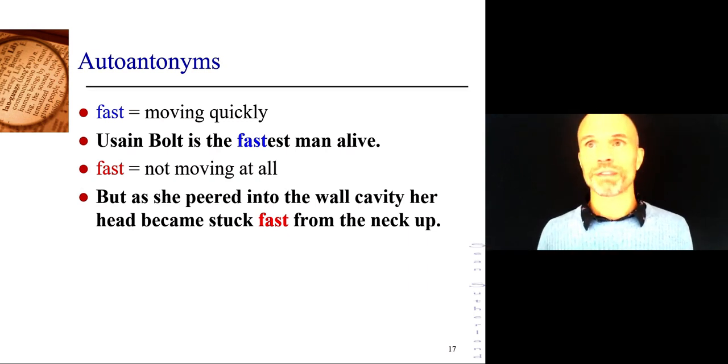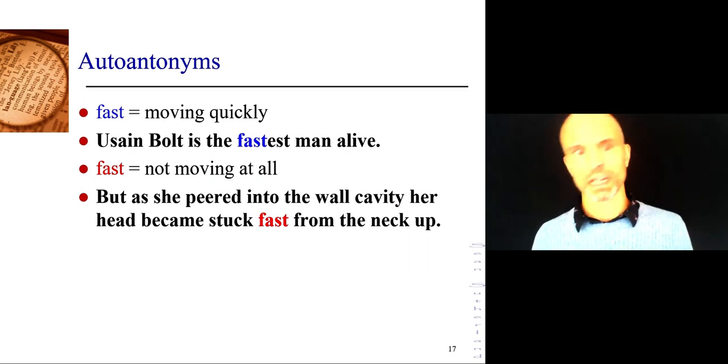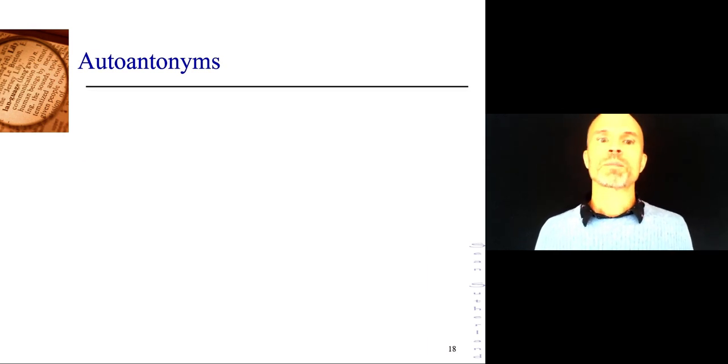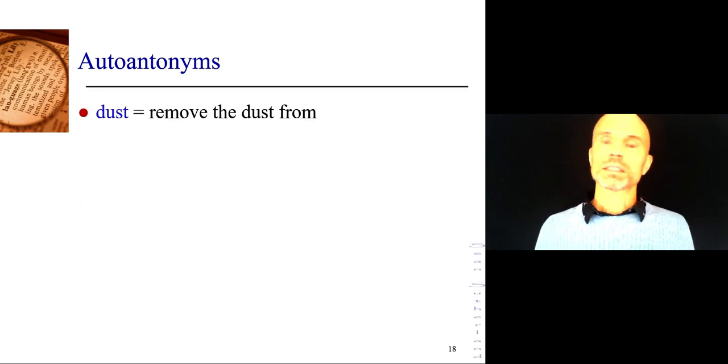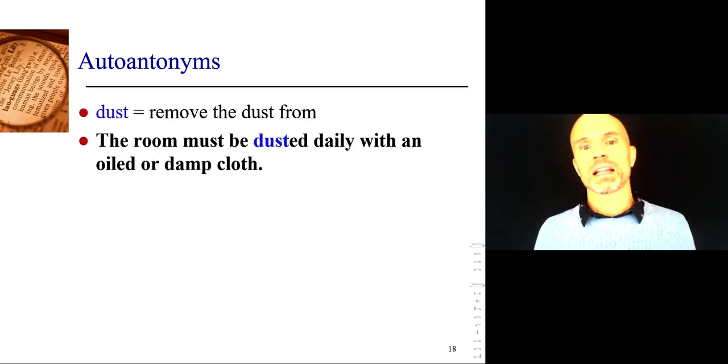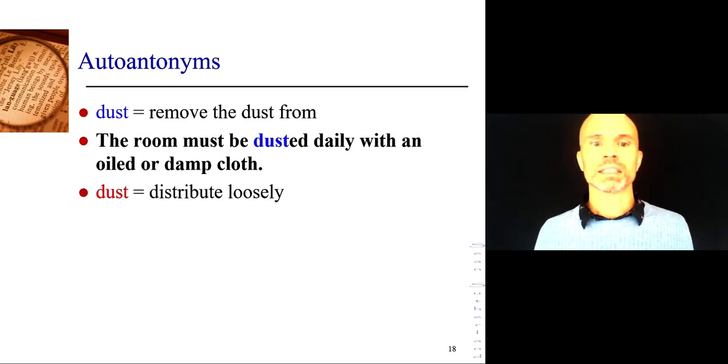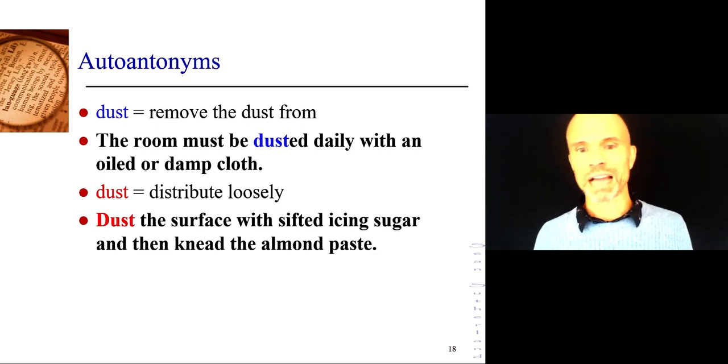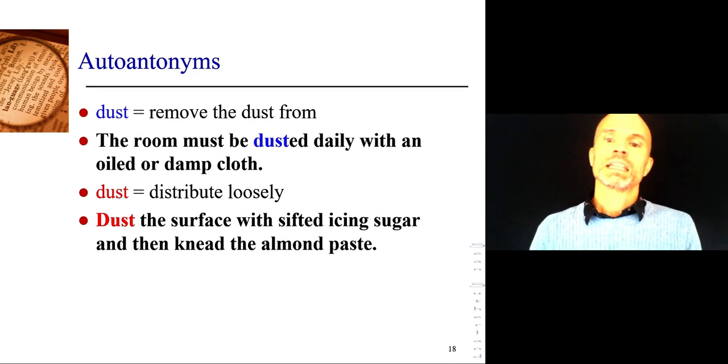So we have fast as moving quickly and fast as not at all moving, or also the word to fast, to not at all eat. Dust can be remove the dust from something, like we see here, the room must be dusted daily with an oiled or damp cloth. Dust can also be to distribute something loosely. Dust the cake with flour, dust the surface with sifted icing sugar, and then knead the almond paste.